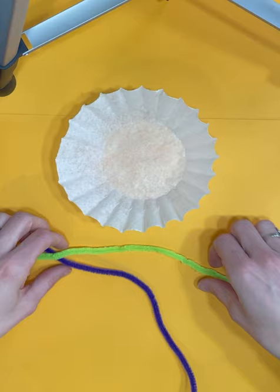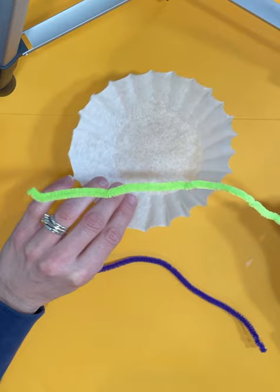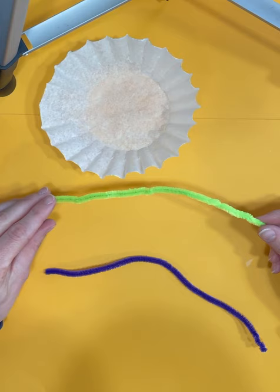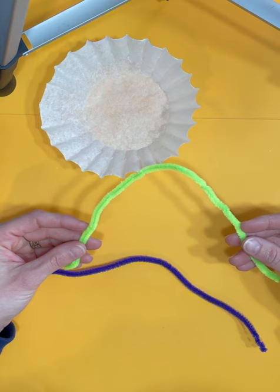So what we're going to do is make a little person that's going to be attached to our parachute made out of the coffee filter. Results may vary here. We're just going to do our best to kind of twist and turn this pipe cleaner to make a little person.